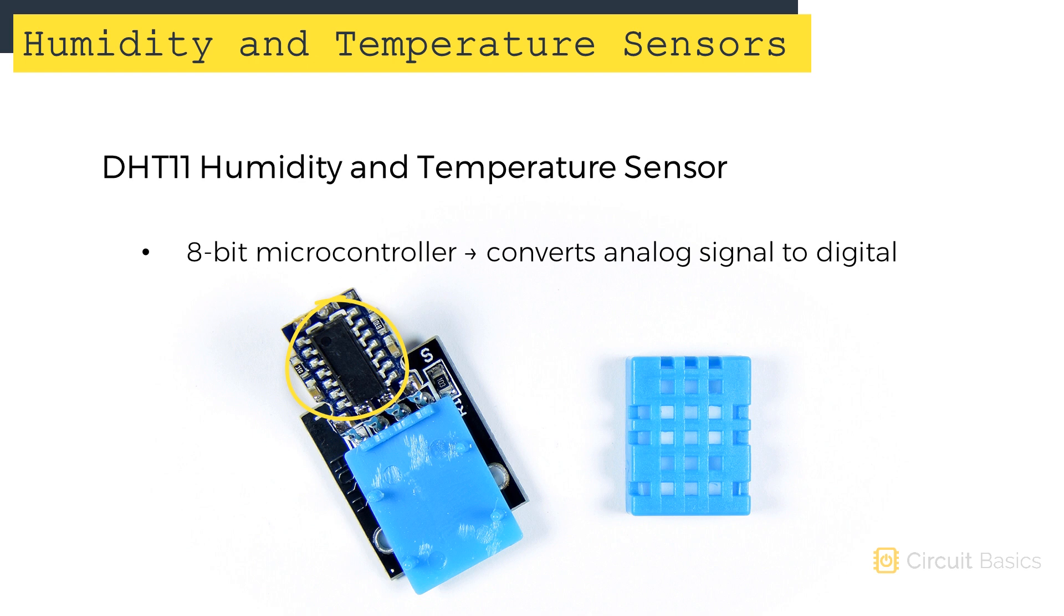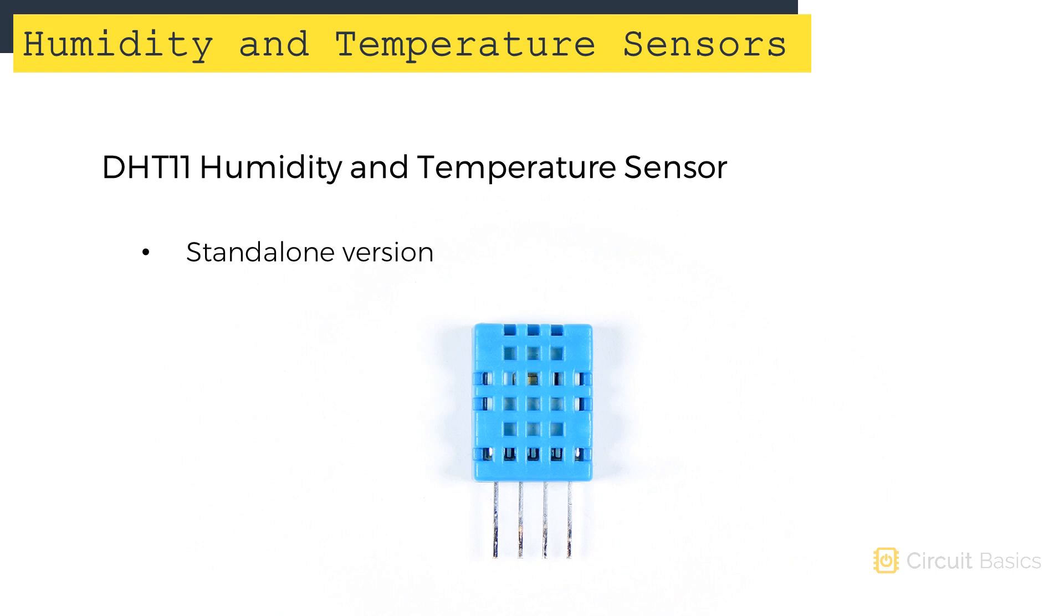This is the breakout board version, but you can also find DHT11s in a standalone configuration. Standalone DHT11s don't have a pull-up resistor, so you have to add your own. This version has four pins. This is the VCC pin. This is the signal pin. This pin isn't used. And this is the ground pin. I'll show you how to set up both of these versions in a minute, but first let's look at how the DHT11 works and what kind of data it's going to provide.